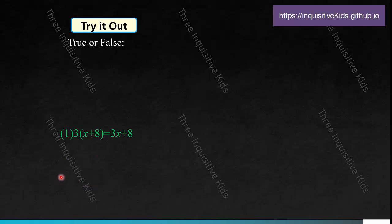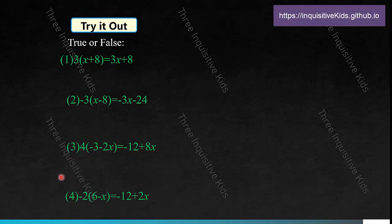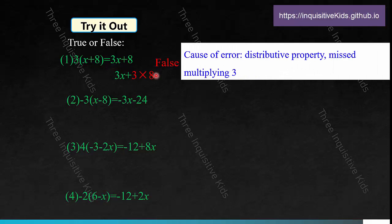Now we're going to play true or false. We have equalities and you need to find out if they are correctly simplified. The first one: 3 times the sum of x and 8 equals 3x plus 8 — that is false, because you need to distribute 3 into both terms: 3 times x is 3x, but you still need to multiply 3 times 8, which is 24. The cause of error was missing the multiplication of 3 to 8.